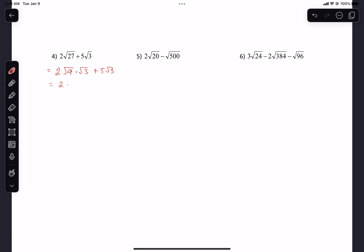So we get 2 times 3 times root 3. 2 times 3 is 6 root 3s plus 5 root 3s. What's that? 11 root 3s. Yes!